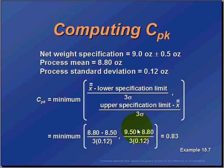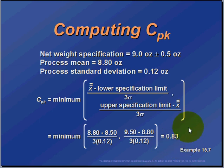Now, what we want to do is take whichever of these two values is the least — that's the one we work with. In this case, the lower value is 0.83. And a CPK that's less than one tells us that our process is not capable.